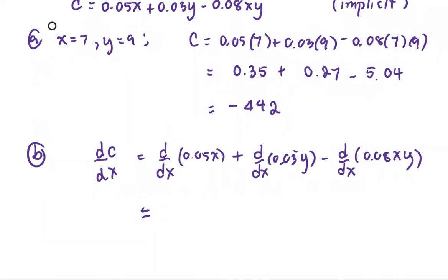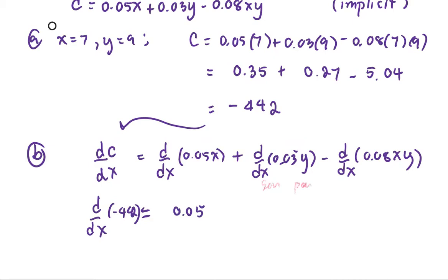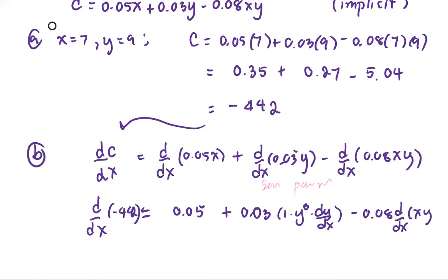The derivative with respect to X of the first term 0.05X gives 0.05. For the next term, we use the general power rule and get positive 0.03 times 1 times Y to the power 0 times dy/dx, which is Y prime. Then minus 0.08 multiplied by the derivative of XY, which is in product form.